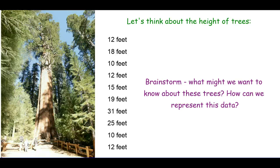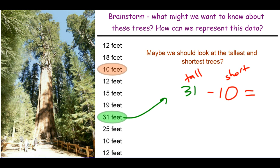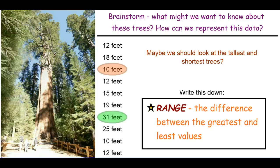There are lots of different things we could use to represent this data. We could create visual graphs — we'll get to those in a later lesson. Or we could find ways of combining these ten numbers into one or two representative numbers. We notice there are some very large trees, like 31 feet, and some small ones, like 10 feet. So one of the first things we do is compare the tallest and shortest: the tallest is 31 feet and the shortest is 10 feet, giving us a 21-foot difference. This difference between the greatest and least values is called the range.